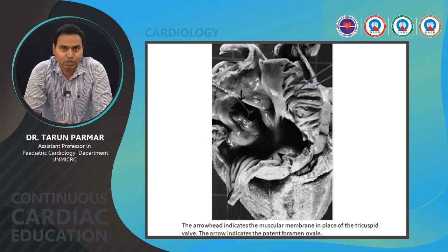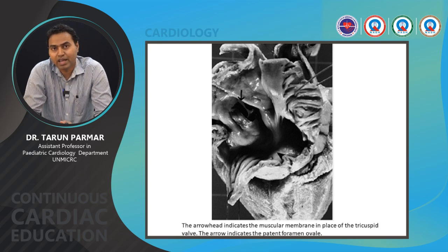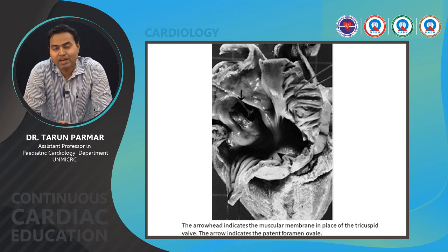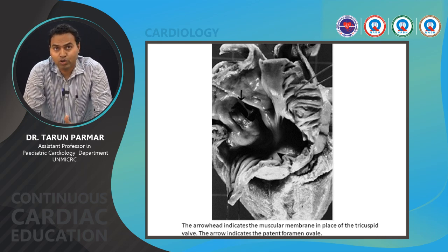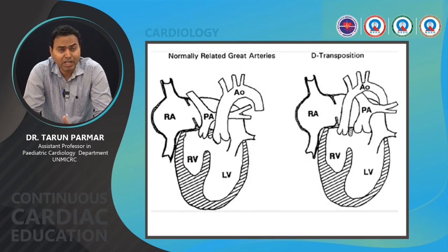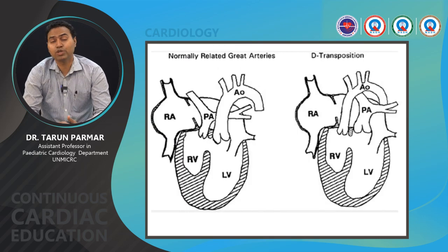This is a morphological specimen representation of tricuspid atresia, where the arrowhead represents the atretic tricuspid valve formed by the muscular septum, and the arrow represents the interatrial communication in the form of a foramen ovale.